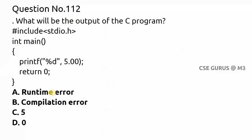Coming to question 112: what will be the output of this C program? It has printf with %d format specifier printing 5.00, a floating-point value. We might think it will print only the integer part, 5, but that is not correct. When you use %d with a float value, it does not simply extract the integer part — the memory representations of float and integer are different.